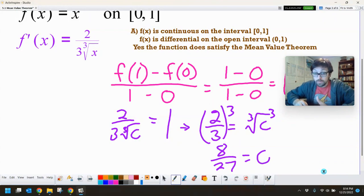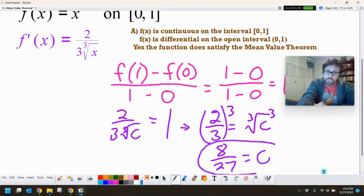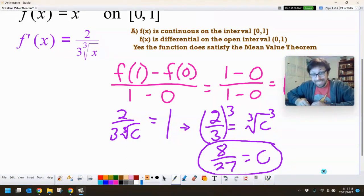So at the x value of 8/27, the average rate of change equals our instantaneous rate of change. Average rate of change from zero to one equals the instantaneous rate of change at the x value of 8/27.